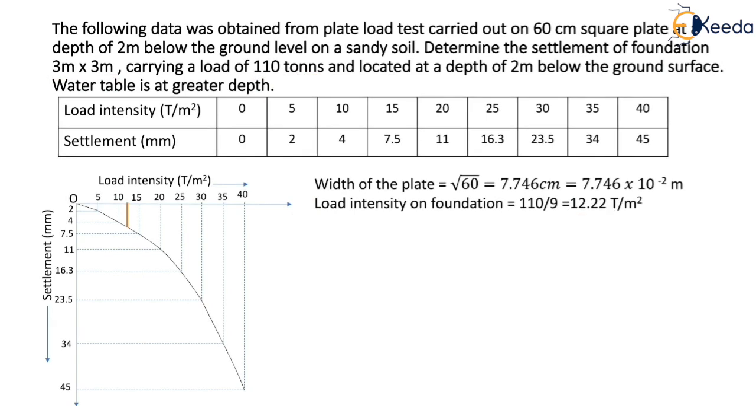Now we determine the settlement of the plate at this load intensity. We draw a vertical line from the point corresponding to 12.22 tons per square meter load intensity on the x-axis. This vertical line intersects the curve at a certain point. From this point we draw a horizontal line which intersects the y-axis.